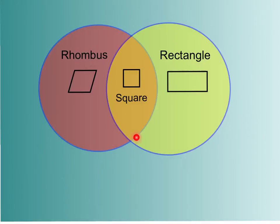Remember, the square is like the hybrid of the rhombus and the rectangle. It possesses all of those properties.